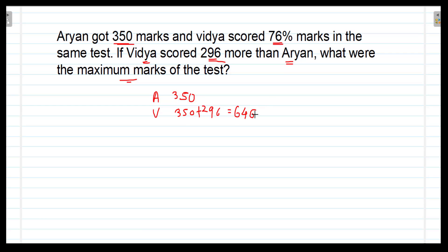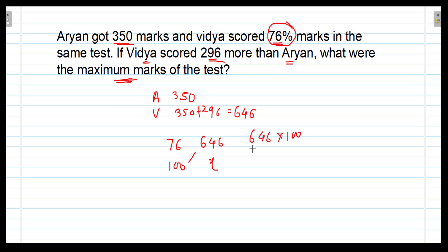Vidya got 646 marks, and this 646 represents 76%. So we can say that 76% equals 646 marks. Then 100%, that is the maximum marks of the test, will be 646 multiplied by 100 divided by 76. If you solve this, you will get 850 marks. So the maximum marks of the test are 850 marks.